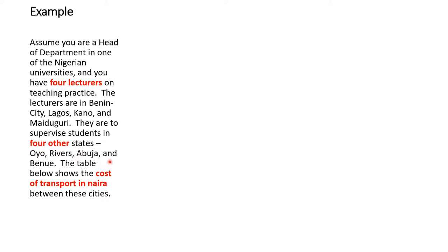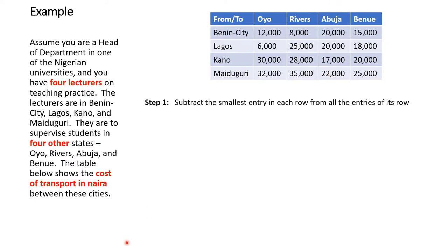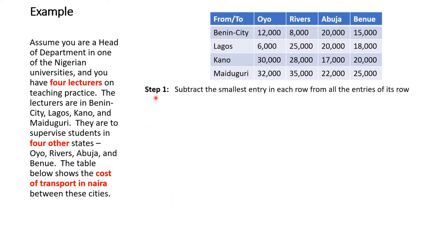The lecturers are to supervise students in four other states: Oyo, Rivers, Abuja, and Benue. The table shows the cost of transportation between these cities. You have the takeoff points and the destinations, along with the amounts to be spent. For example, from Benin City to Oyo is 12,000, to Rivers is 8,000, to Abuja is 20,000, and to Benue is 15,000.